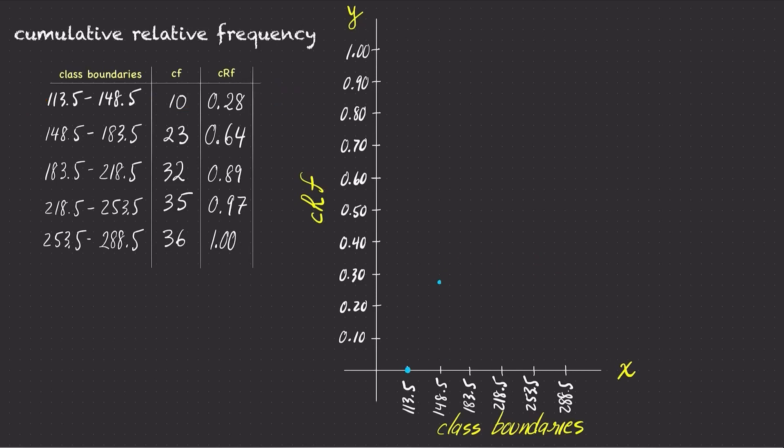For the second class, going from 148.5 and up to 183.5, the cumulative relative frequency is 0.64. So, above the second class upper boundary at 183.5, mark a dot with a height of 0.64 to indicate that the CRF is 0.64 for the second class.